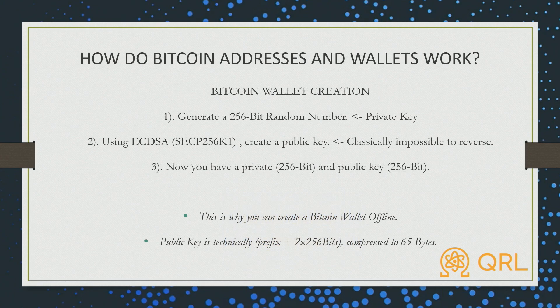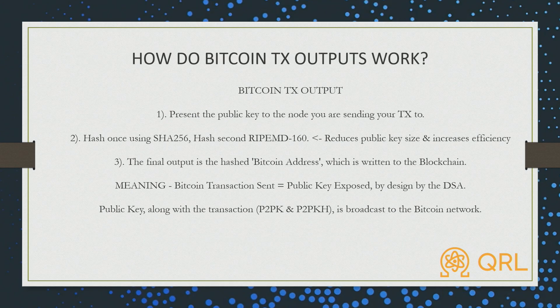This is an abbreviated version of how a Bitcoin wallet is created. A Bitcoin wallet, when you create a private key, is really nothing more than a 256-bit random number. Using ECDSA with the SECP256K1 parameters — that's a type of ECDSA — you create a public key, and that's like a one-way function. Now you have a private and a public key. This is also why you can create a Bitcoin wallet offline.